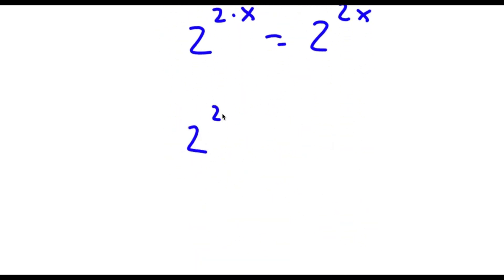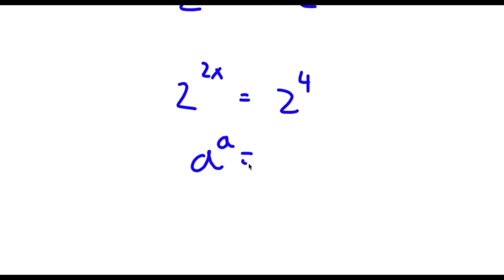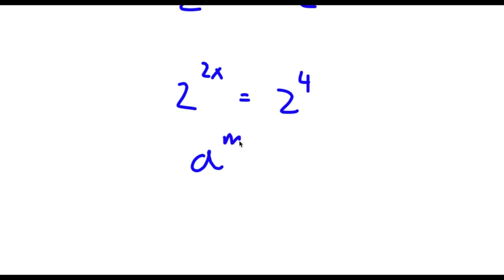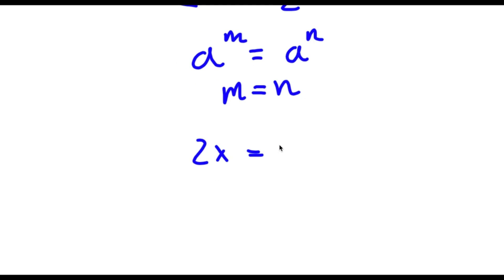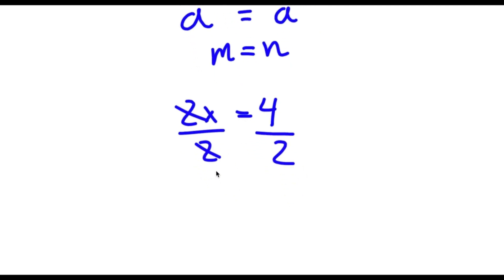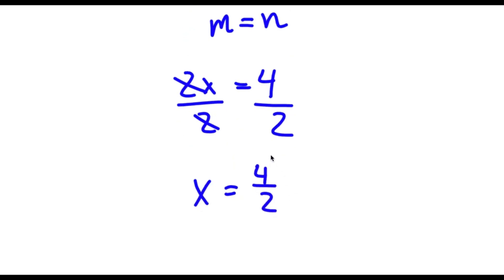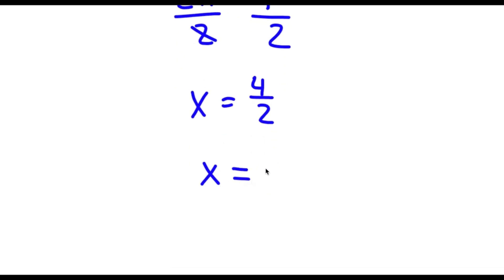So now I have 2 to the power of 2x is equal to 2 to the power of 4. If I have something in the form a to the power of m is equal to a to the power of n, this means that m is equal to n. So in this case, 2x is equal to 4. Now I have a simple equation — all I have to do is divide both sides by 2. These cancel out and I'm left with x is equal to 4 over 2, which is simply equal to 2.